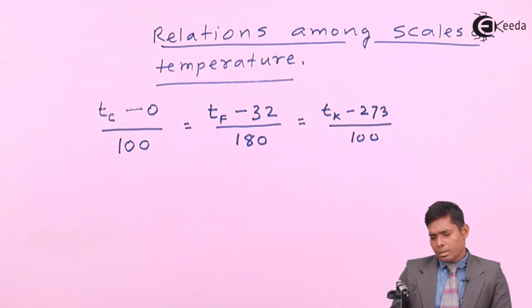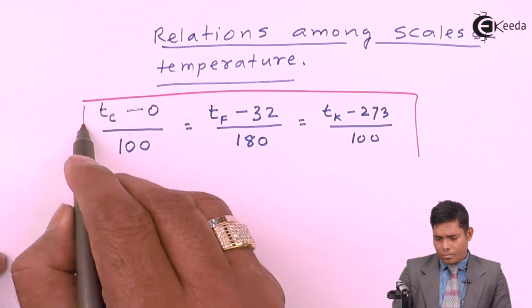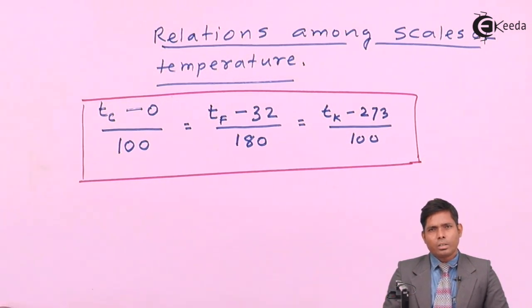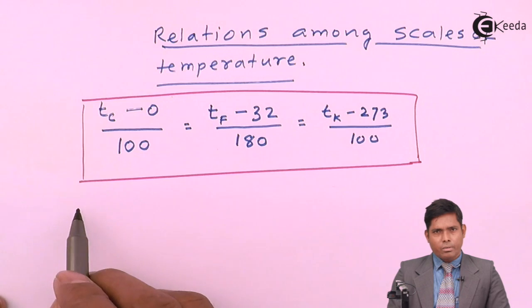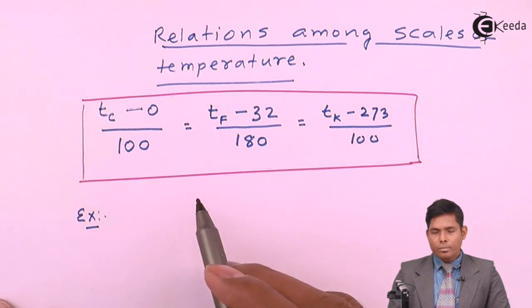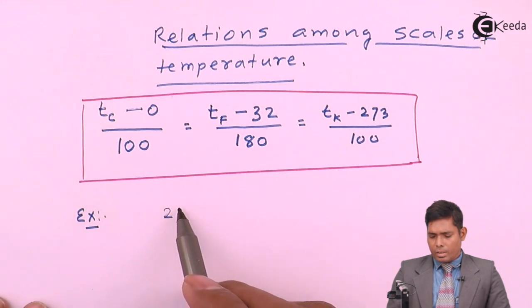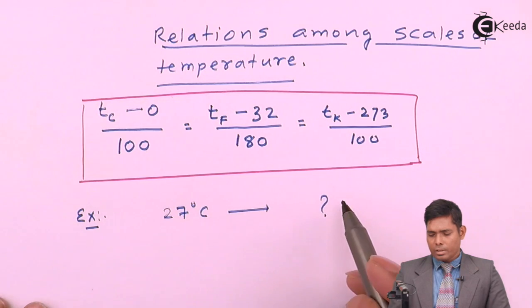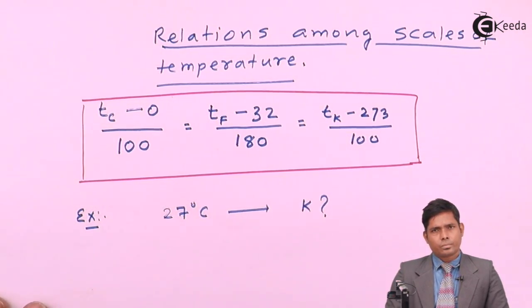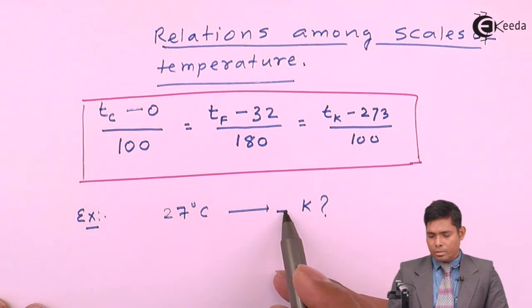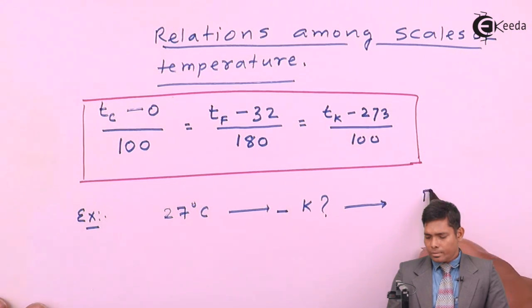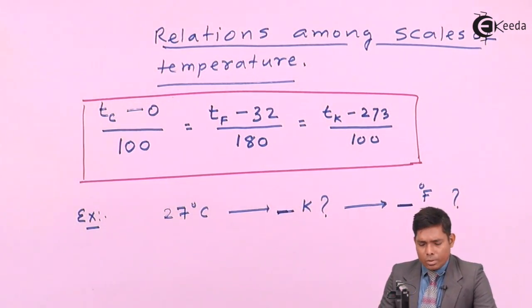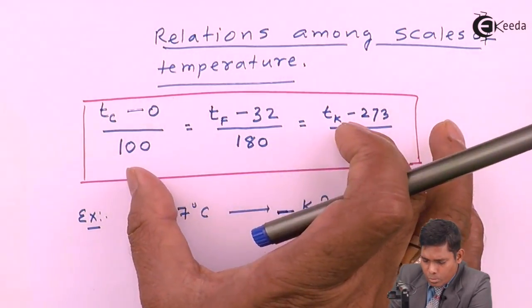This formula is used to relate any temperature in one scale to any other scale. For example, if the temperature is 27 degrees centigrade, how much is this in Kelvin or in Fahrenheit? That is the question. We can use the centigrade-Kelvin and centigrade-Fahrenheit relations from the formula.